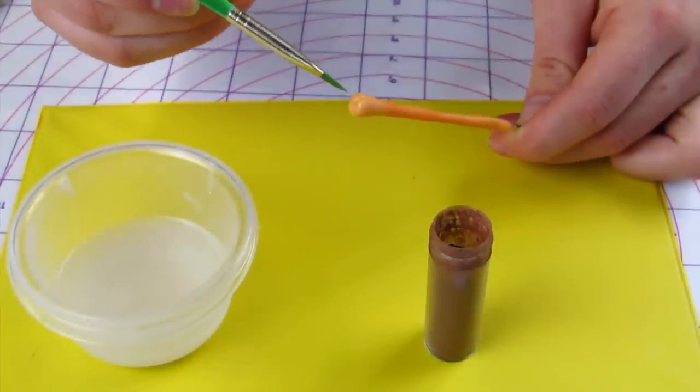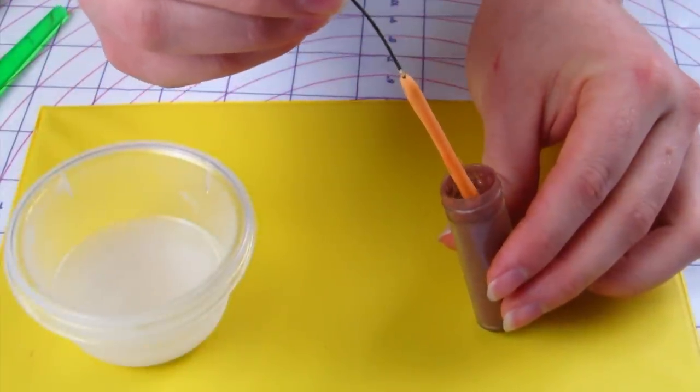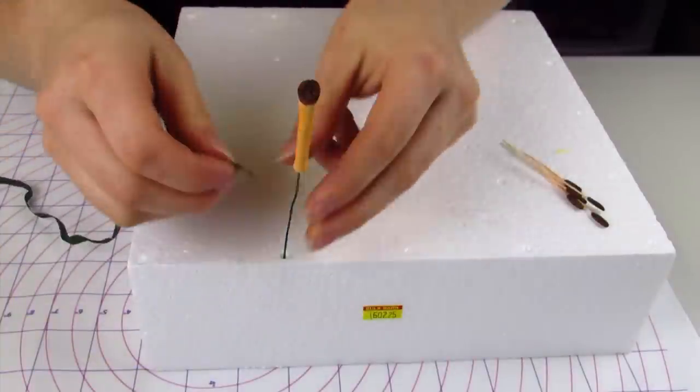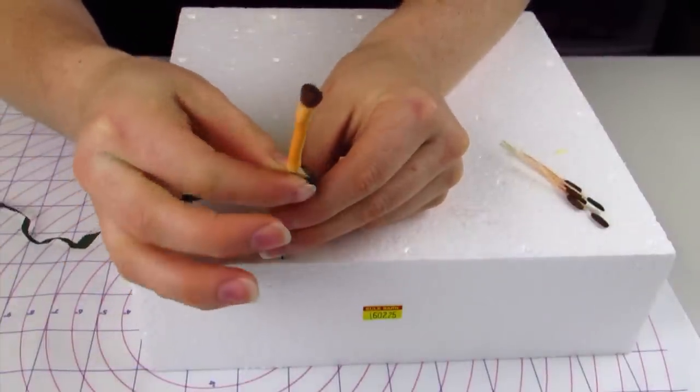Once it's dry I'm going to dip it into my color dust but first I'm just going to put a little gum glue on the end of it. Now you're ready to wrap the pistil and the stamens together.